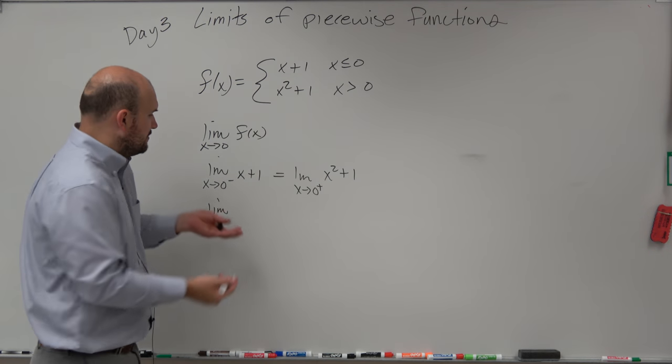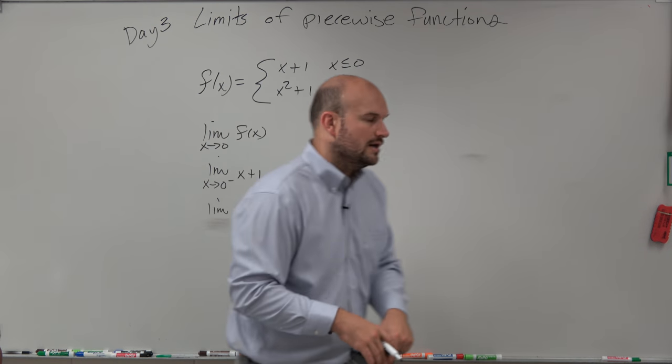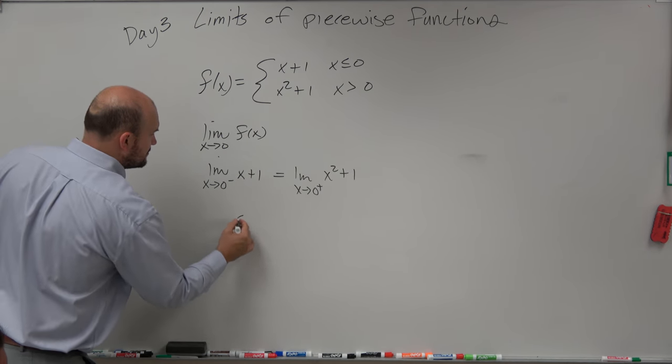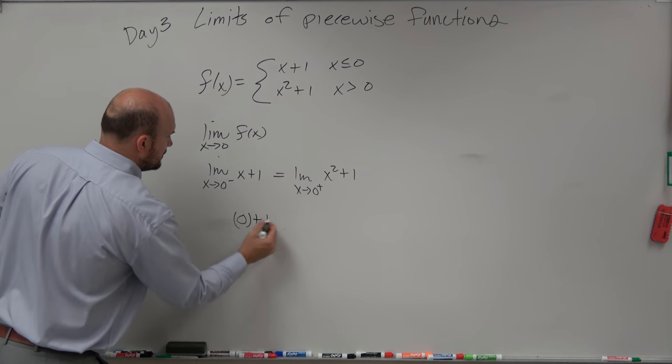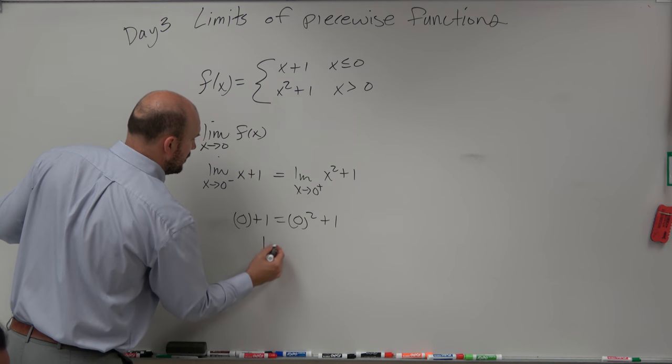Now it really doesn't matter. The left and the right is really just saying the direction. So all we really need to do is evaluate 0 plus 1 has to equal 0 squared plus 1. 1 equals 1.